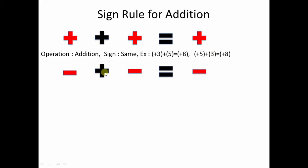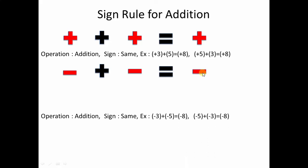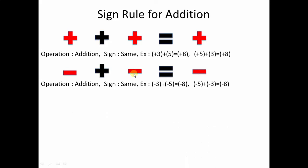A negative number added to a negative number gives a negative result. The operation is addition — you add both numbers and the sign remains the same. So minus 3 and minus 5: you add 3 and 5 to get 8, and the sign is negative, giving you minus 8.